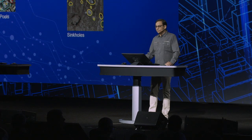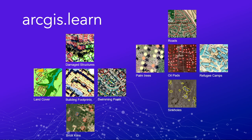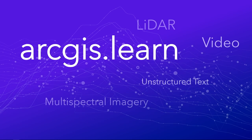You may have seen some examples of what you could already do with imagery data and the ArcGIS Learn module, like object detection and classification examples. What we are excited to announce today is that we can do more with ArcGIS Learn in the areas of LiDAR, video, unstructured text, and multispectral imagery.